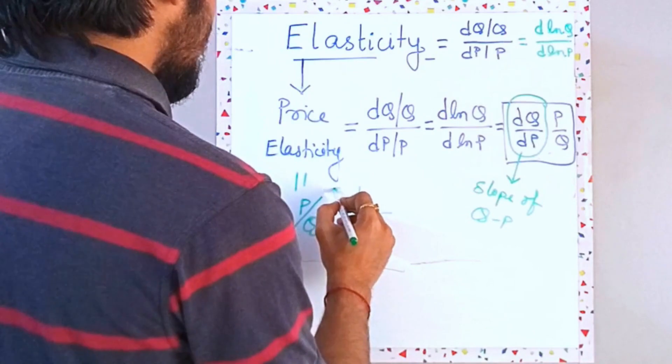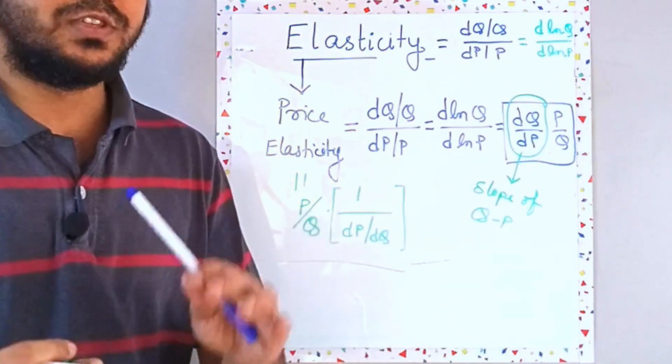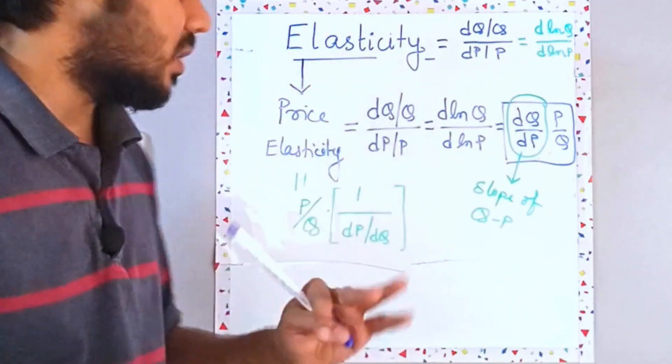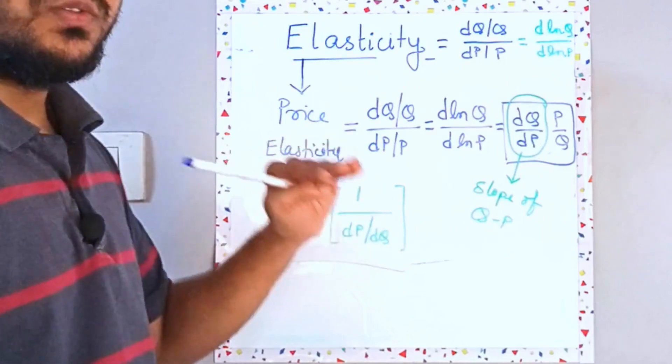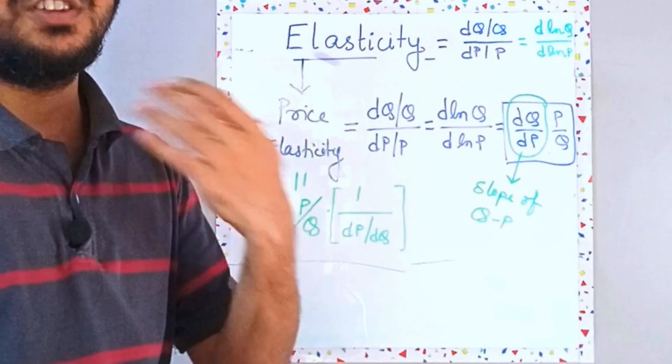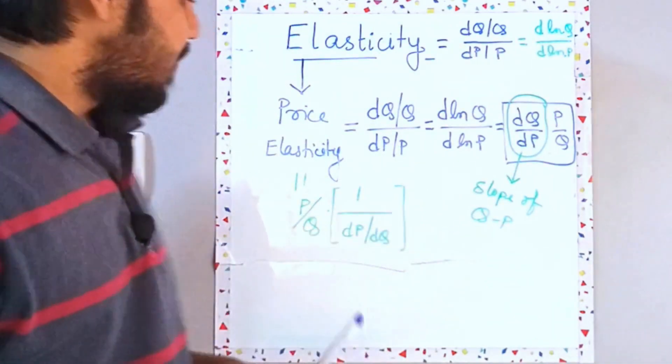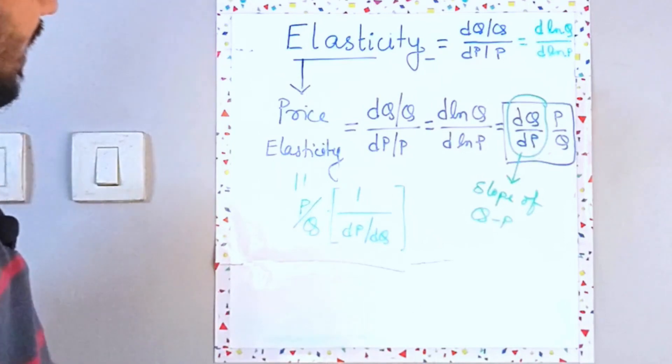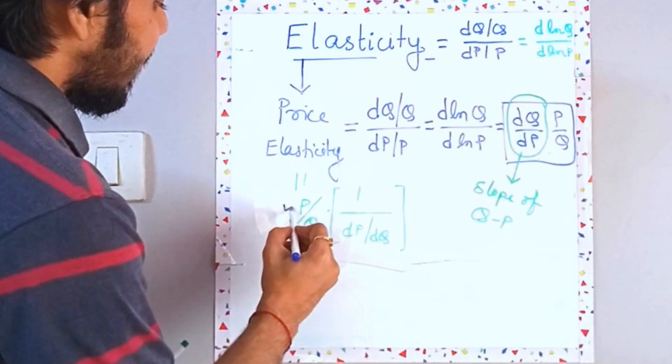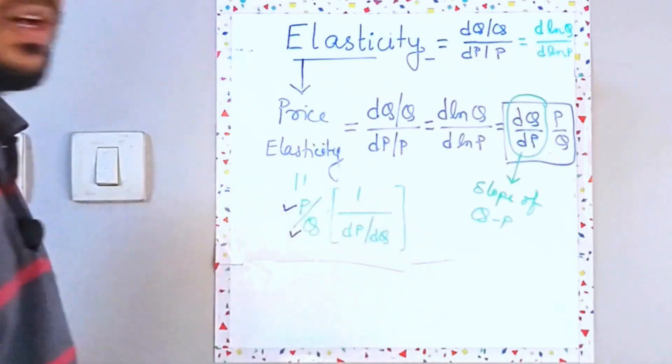Now over here I am taking a lot of mathematical liberties but bear with me because generally you cannot directly flip over things in calculus but I can do it over here because right now I am just governed with the idea of differentials and ratios. So what is the significance of this? Significance of this is that elasticity is dependent upon the price and quantity ratio and the inverse of the slope.